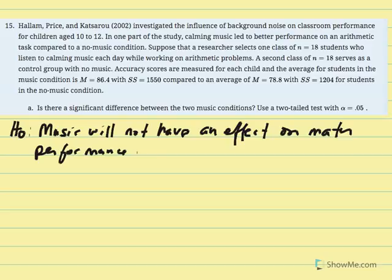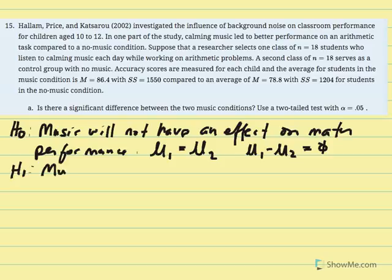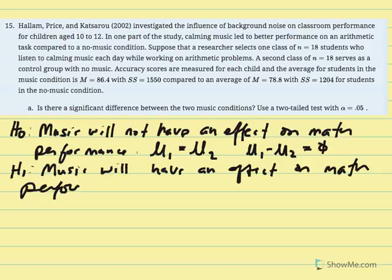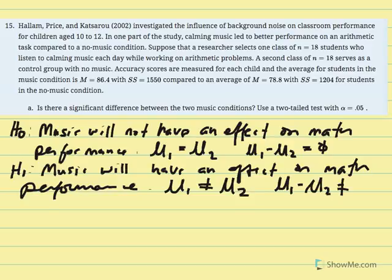I'll model this from beginning to end, starting with the research and null hypotheses. The null says music will not have an effect on math performance — the populations are equal, mu1 equals mu2, or mu1 minus mu2 equals zero. Although the previous research stated students performed better with music, we're instructed to conduct a two-tailed test, so the null uses 'equal to' notation and the research hypothesis uses 'not equal to' notation.